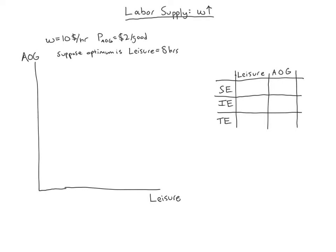So what we're going to do first is a little review in terms of making a diagram. We're told that the wage is $10 per hour and the price of all other goods is $2 per good. We can divide those two to get the real wage. Our real wage, W over P, is 5 goods per hour. We know that this real wage tells us the slope of our budget constraint once we construct this diagram.